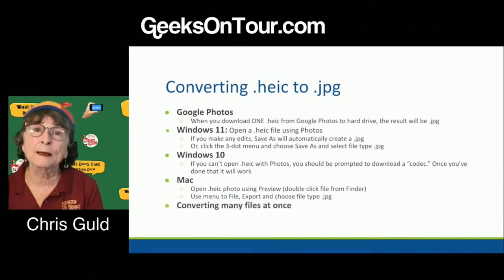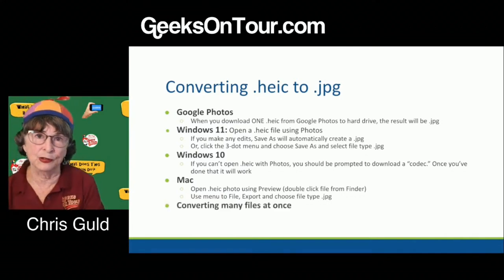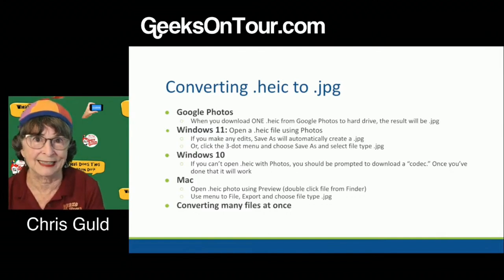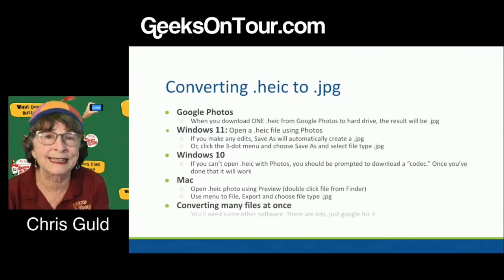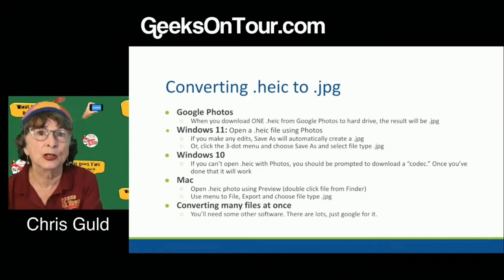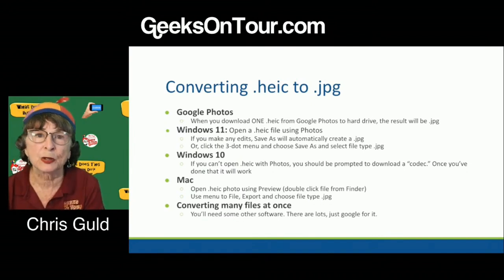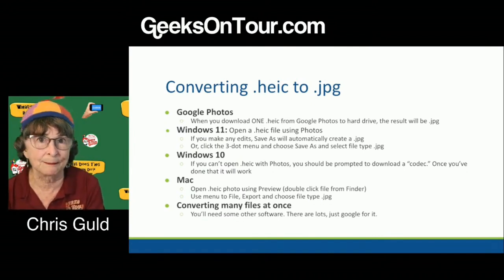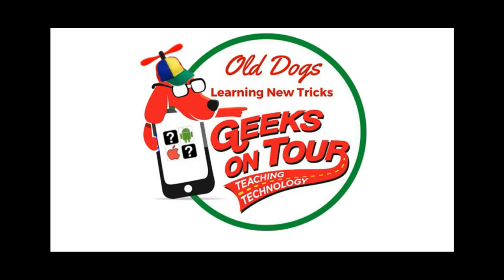Now, if somebody sent you a pile of HEIC files and you need them all in JPEG — for example, WordPress cannot use HEIC files in my experience; if you try to add one to a webpage it says it doesn't know what it is — you'll need some other software for batch conversion. There are lots of them, including free ones. Just Google 'convert HEIC to JPEG'.